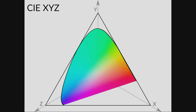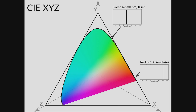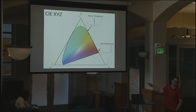You can get oriented by looking at where known light sources land. My green laser pointer lands right here; a red laser pointer lands right here. One thing you can immediately see is that this diagram is totally a lie — if it were actually showing all these colors correctly, you would not be able to see my green laser pointer since the projector would already be showing that color. Projectors are terrible. The stuff around the edges should be extra-bright and intense, like a laser pointer.